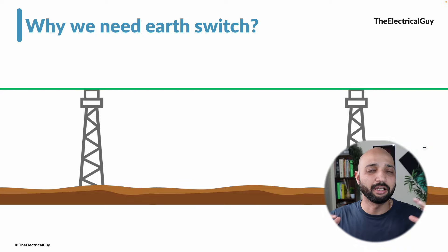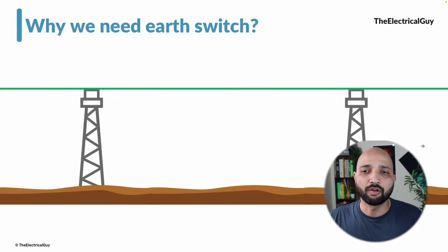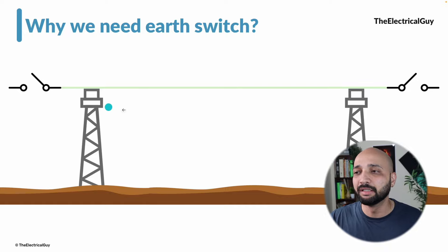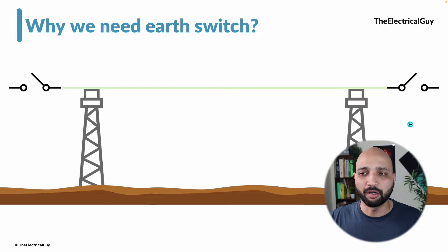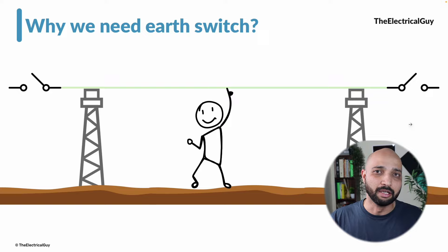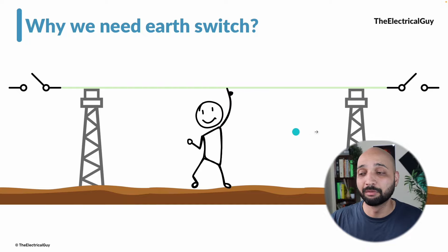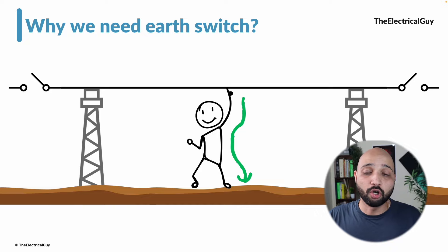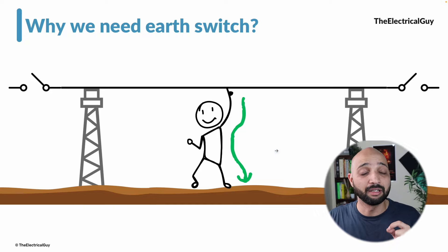A similar scenario happens with electrical power. Imagine a transmission line carrying power over a long distance. If we turn off and disconnect that line from both ends, power stops flowing. But there will still be some charges — free electrons trapped between those sections with no path to go. If an operator touches that line accidentally during maintenance, those trapped charges will find a path to ground through his body, which can be very dangerous and even life-threatening.